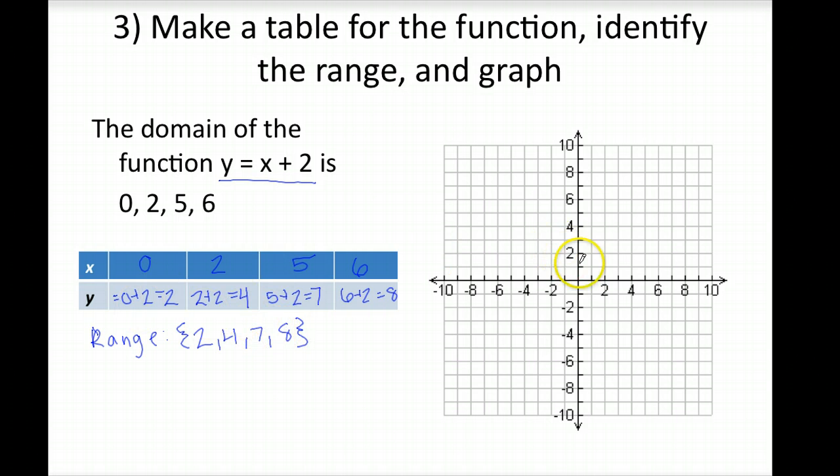And then, we're asked to graph it. So, we have the ordered pair 0, 2; 2, 4. Then, we have 5, 7; and 6, 8. Now, we only graph those four points, because we're given a restricted domain. So, we only want the ordered pairs that correspond with that given domain.